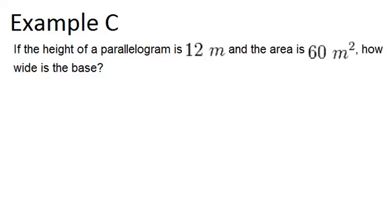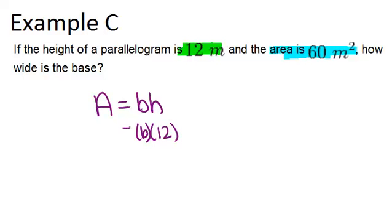So this is similar to the last problem. We're given the height is 12 meters, and the area is 60 meters squared. So if we remember that the area is always base times height for a parallelogram, and we know the height is 12, and we don't know the base. That's what we're trying to figure out.